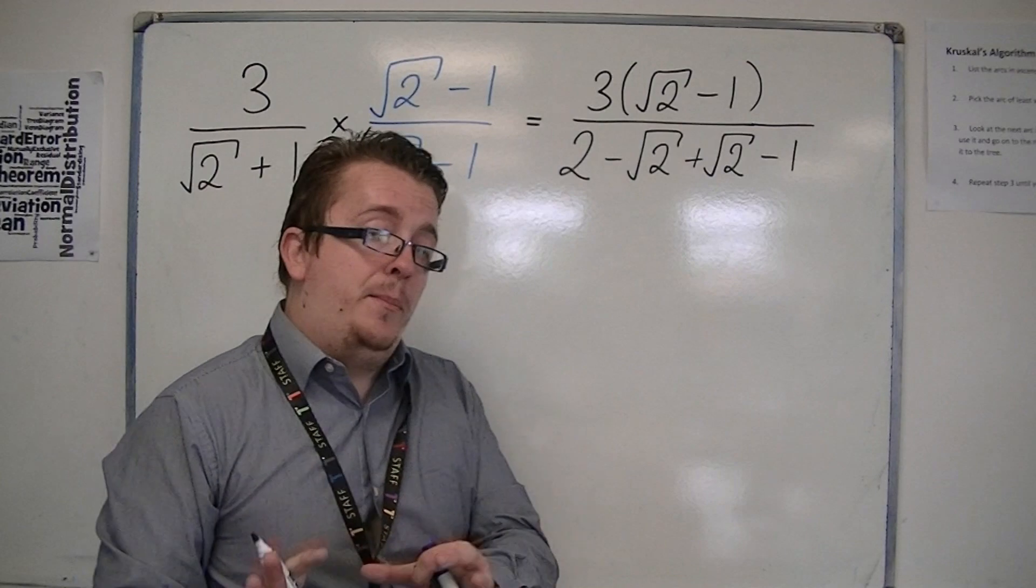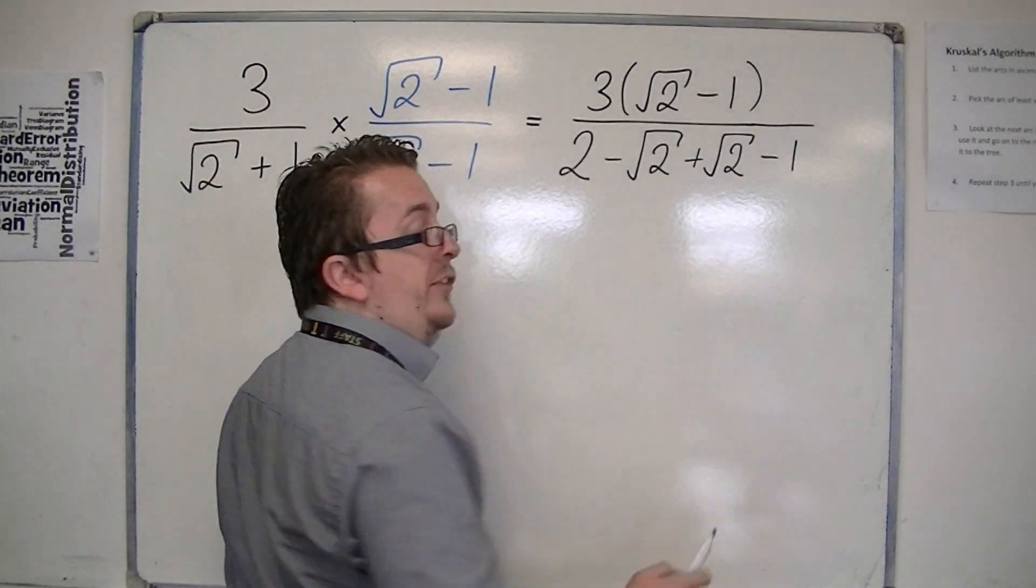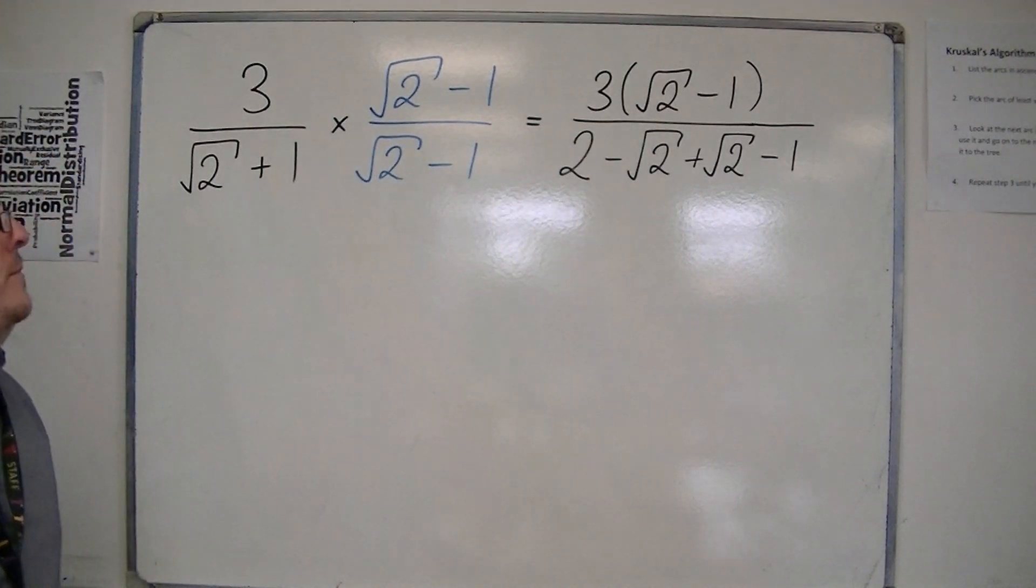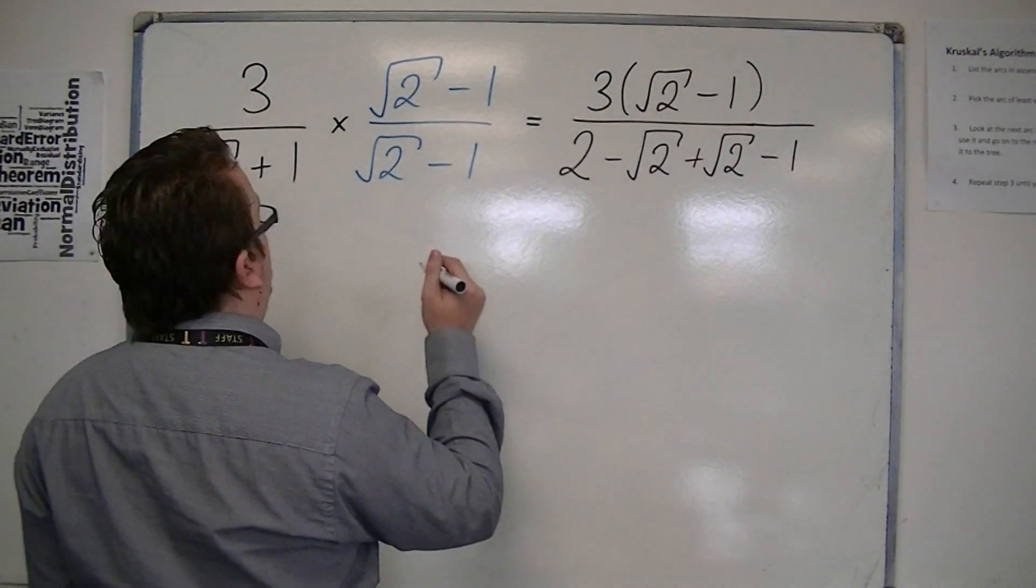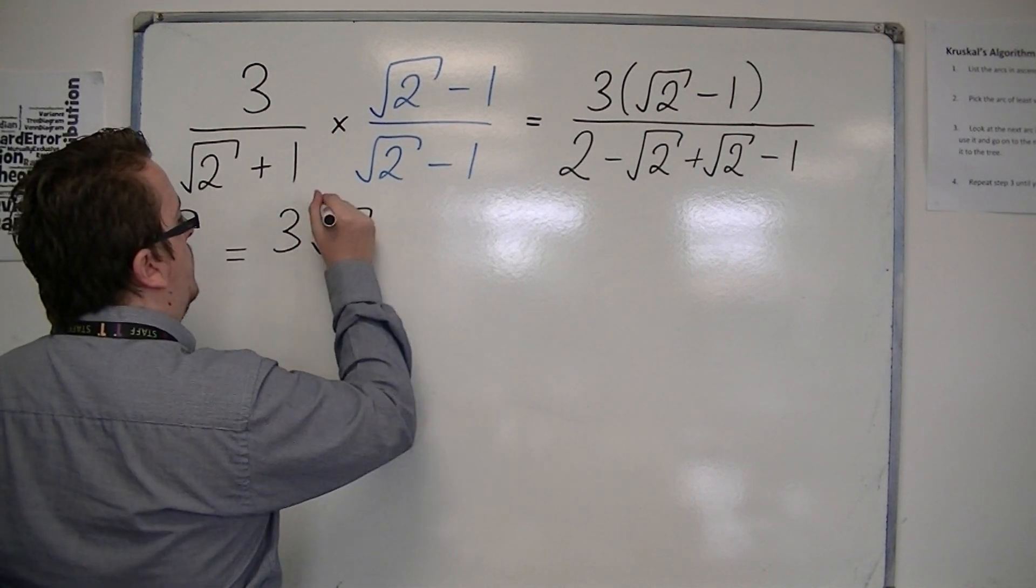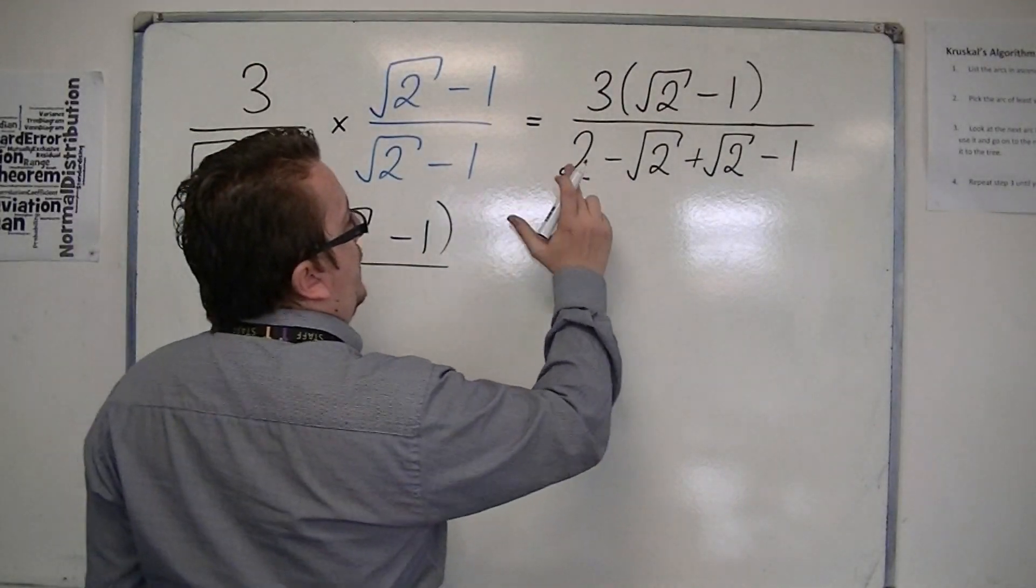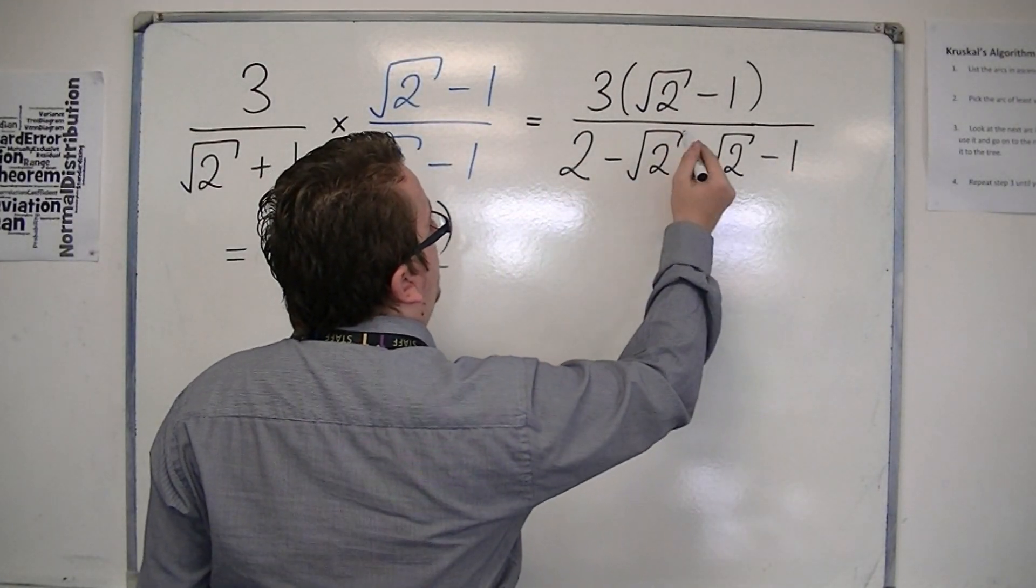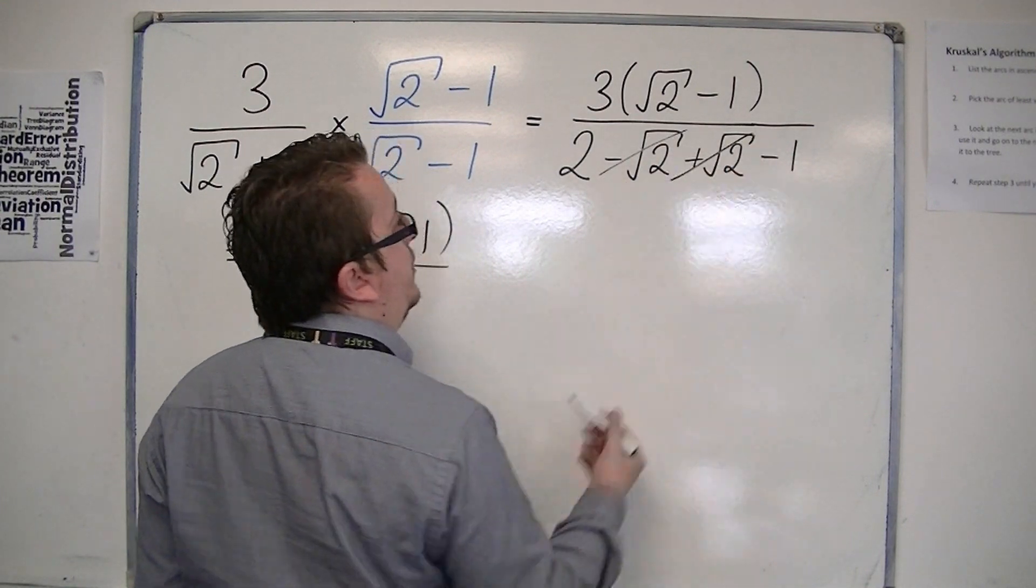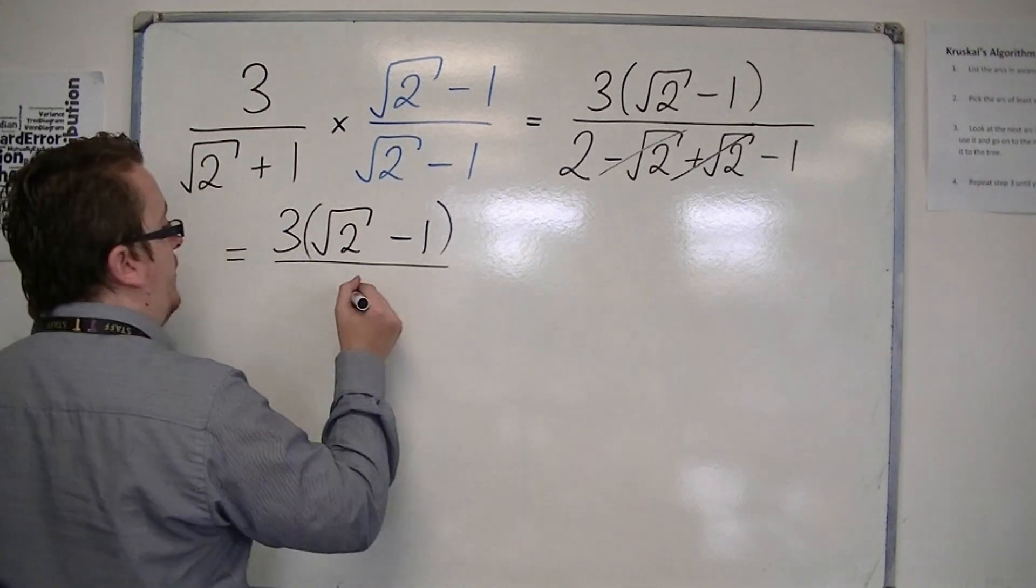Now what's happened here is that you should always get the two surds cancelling one another out. So in actual fact, what I have is 3 root 2 minus 1 in the numerator, and I've got 2 take away 1. Because this minus root 2 and the plus root 2 cancel one another out, I'm just left with 2 take away 1, so that's just 1.